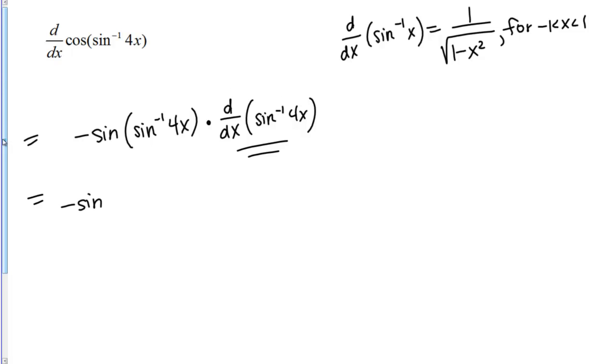So I'm going to keep this negative sine of the inverse sine out front for now. We'll deal with reducing that in a minute. The derivative of the inverse sine, so I'm going to have 1 over the square root of 1 minus,